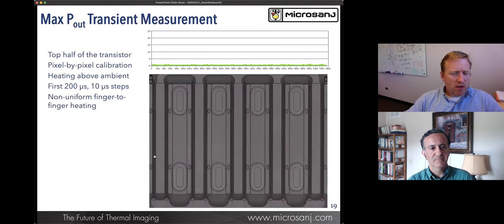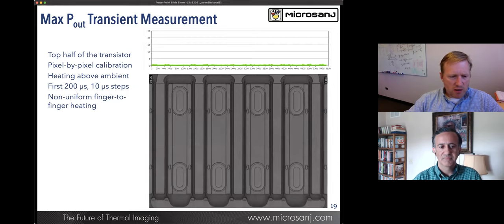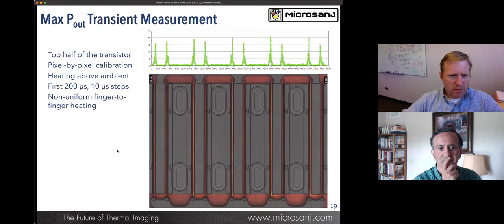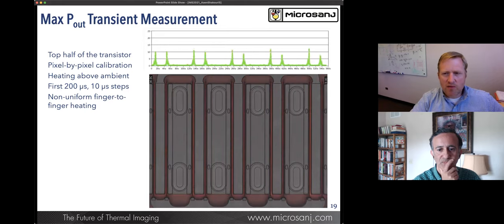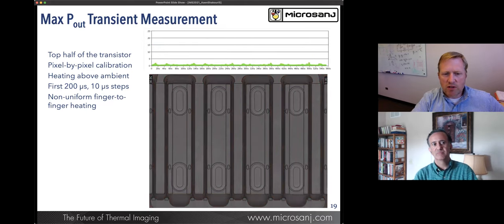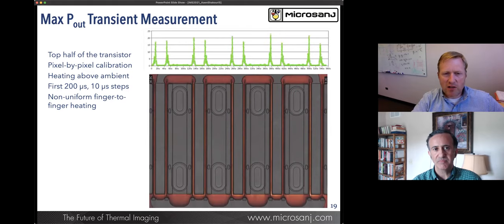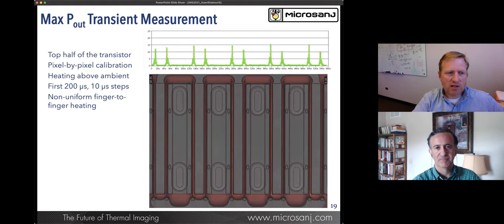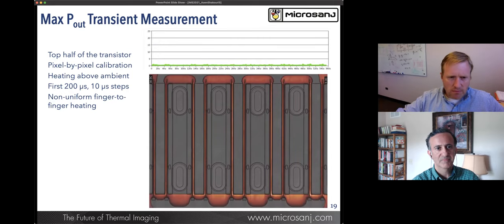As we get into the transient measurements, we're going to measure the device with that 50 nanosecond resolution. In the bottom image I'm showing here, this is a movie as we heat up the device. If you watch the movie on the top where we do a cross section, you'll see that some of the fingers do actually heat up a little bit asymmetric. That's something that if you're going to design for memory effects, each one of those transistor fingers has a slightly different thermal environment. Even though they're all laid out identical, their local environment is slightly different. You only really see this under these transient imaging conditions. In this measurement we're measuring for the first 200 microseconds in 10 microsecond steps.